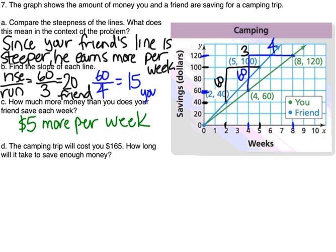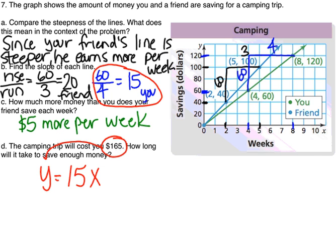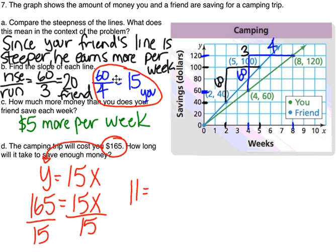Lastly, the trip will cost you $165. How long will it take to save money? We know the slope. We're going to use the line for your slope. So that means the equation would be y equals 15 times x. In order to solve for the x value, we're going to substitute the 165 in place of y and solve for x. Divide by 15 on each side. 165 divided by 15 comes out to be 11. So for your final answer, x equals 11 weeks. It will take you 11 weeks to save enough money for the camping trip.